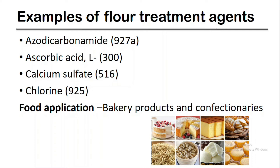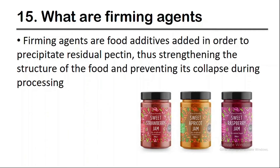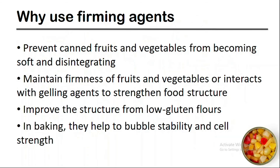Now let's talk about what firming agents are. Firming agents are food additives added in order to precipitate residual pectin, thus strengthening the structure of the food and preventing its collapse during processing. They can prevent canned fruits and vegetables from becoming soft and disintegrating, maintain firmness of fruits and vegetables, or interact with a gelling agent to strengthen food structure. Also, they can improve the structure of low-gluten flours, and in bakery, they help with bubble stability and cell strength.